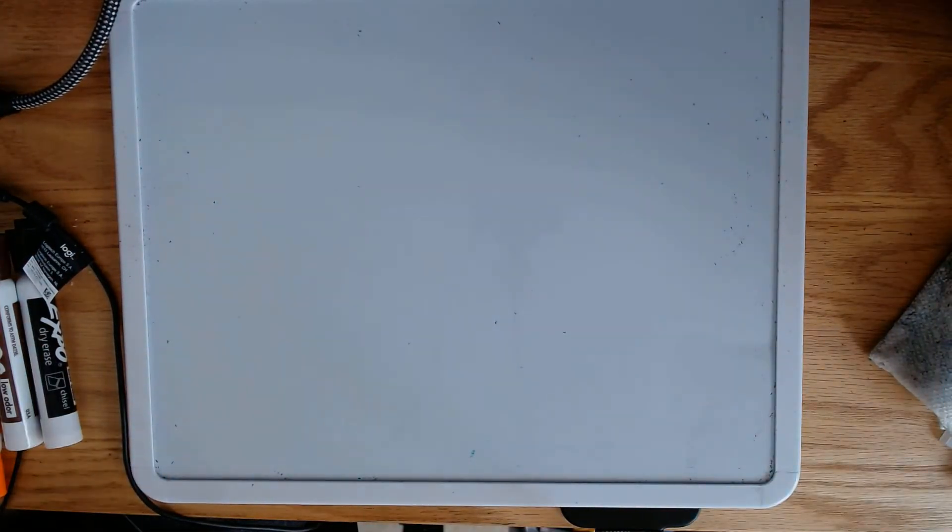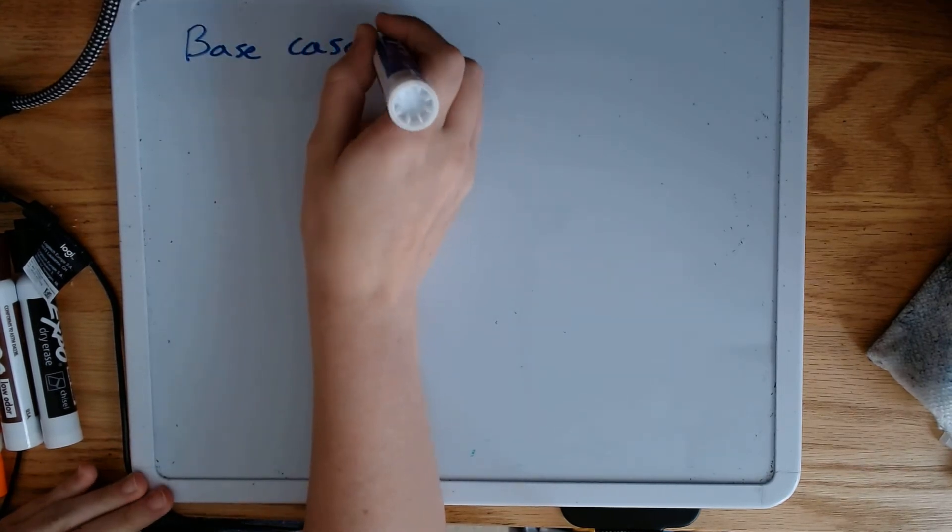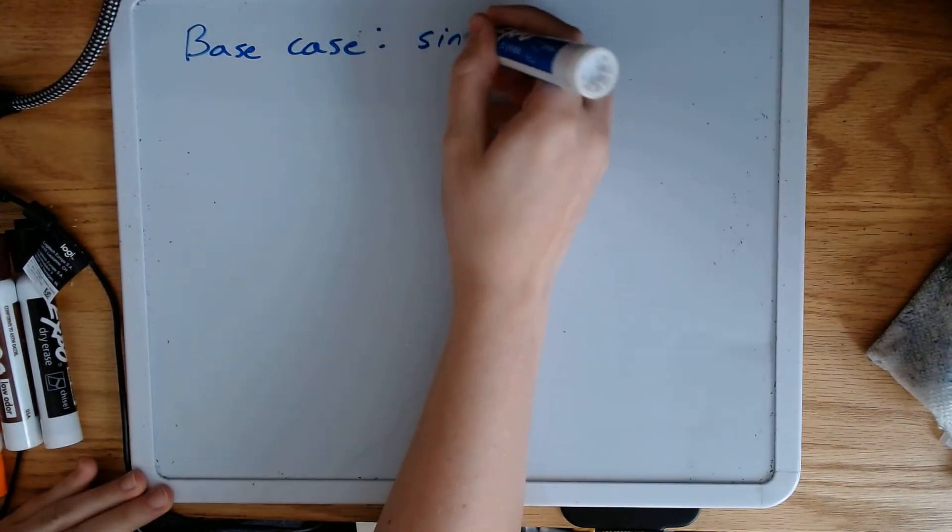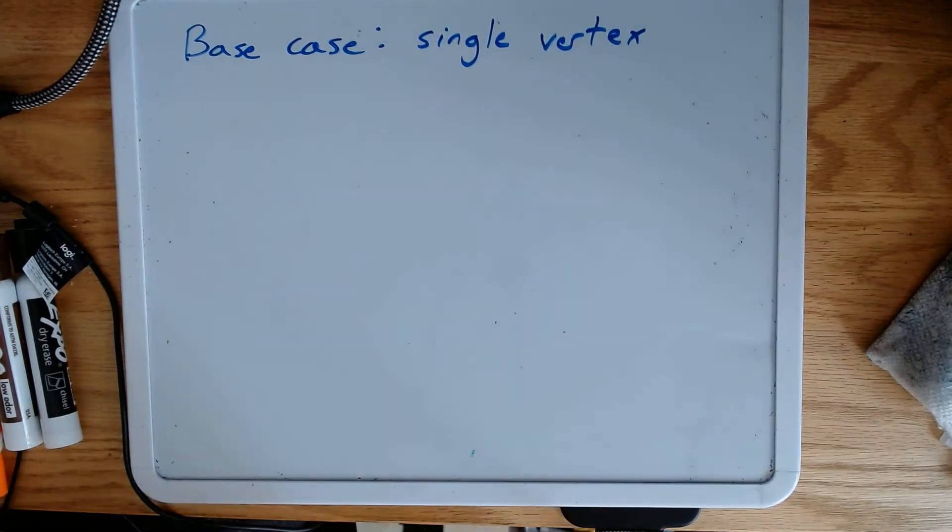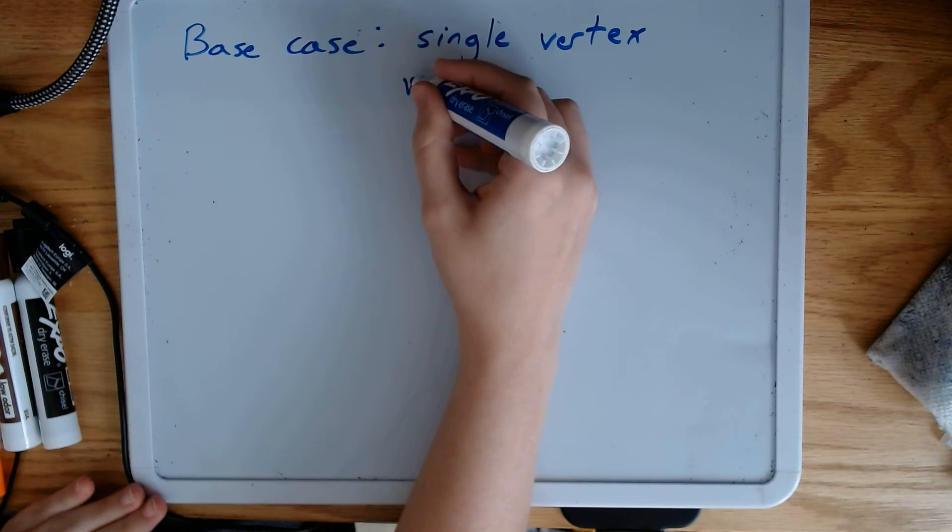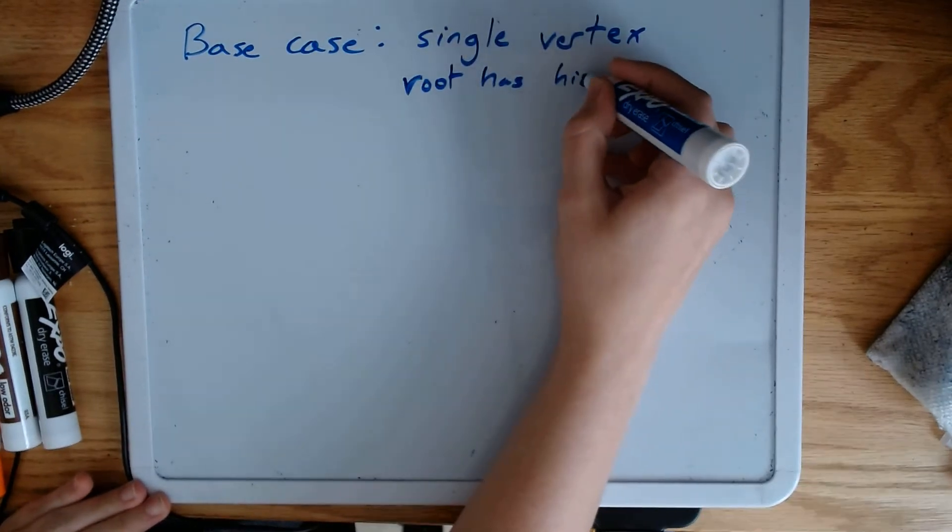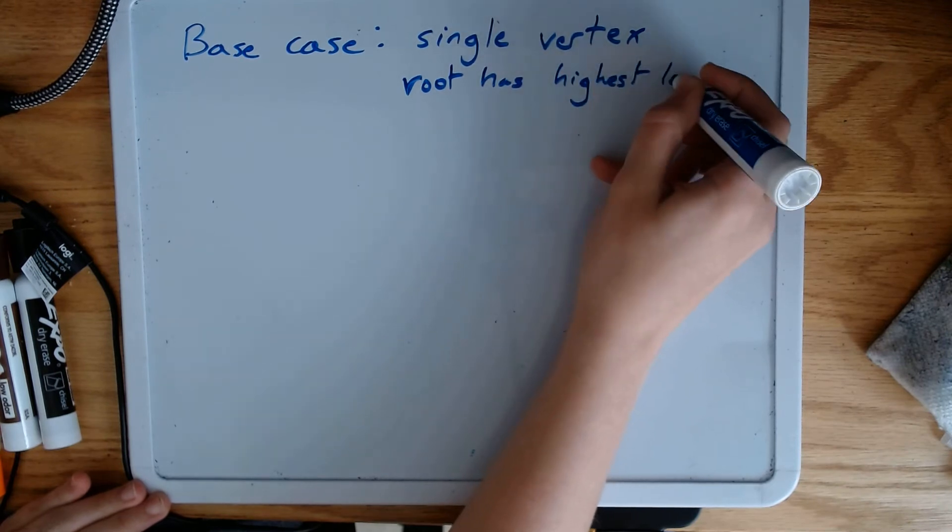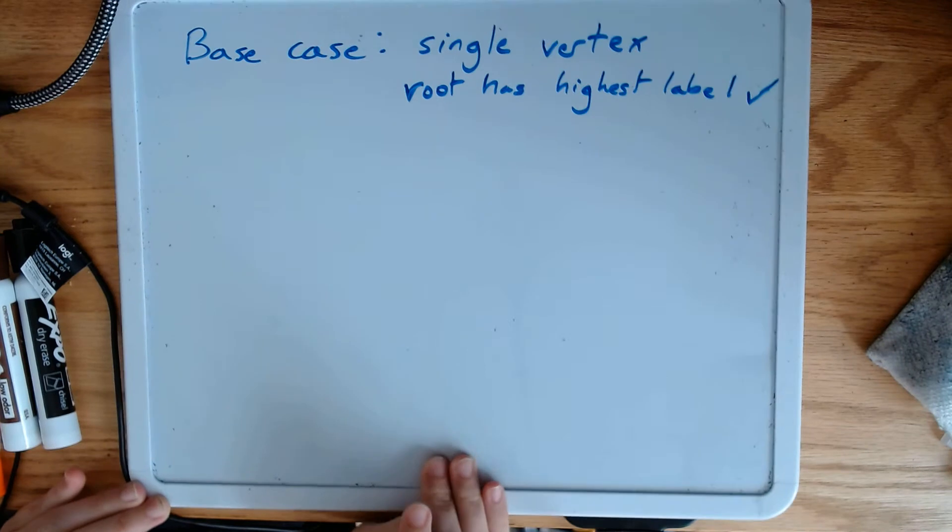So what's our base case? Well, our base case for a rooted tree is just the single vertex. Well, there's no other vertex to compare it to. So the root has the highest label because it has the only label. So that's pretty boring.